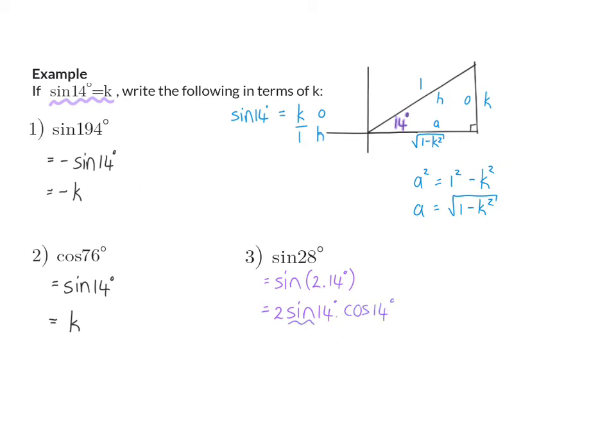For sin 14 and cos 14, we can now use our information and our triangle. Sin of 14 we already know is k, and cos of 14 is adjacent over hypotenuse, which will be the square root of 1 minus k squared over the hypotenuse, which is 1. Our final answer: 2k times the square root of 1 minus k squared.